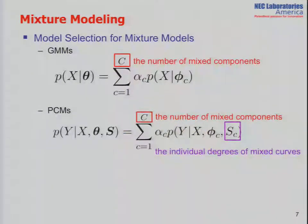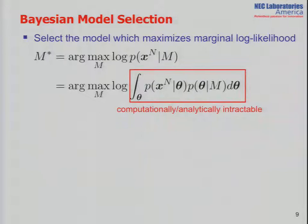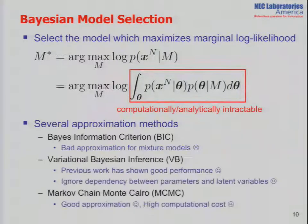In this model, model selection means choosing the number of mixture components, and we also want to choose the individual degrees of mixed curves. There are many ways to approach this problem, and we follow the Bayesian way. Bayesian selects the model which maximizes the marginal likelihood, but this integral is often computationally intractable, so we need approximation methods like BIC, variational Bayes, or MCMC.